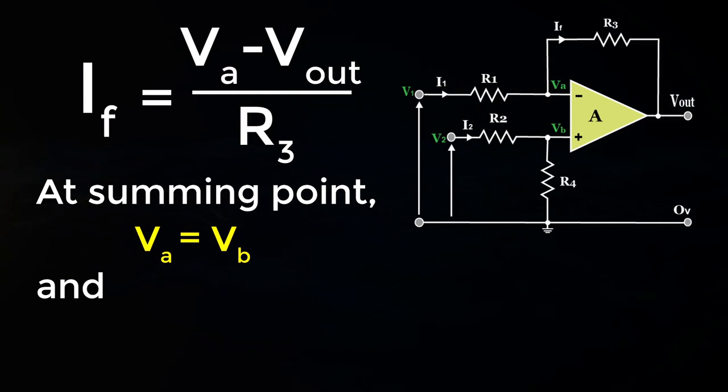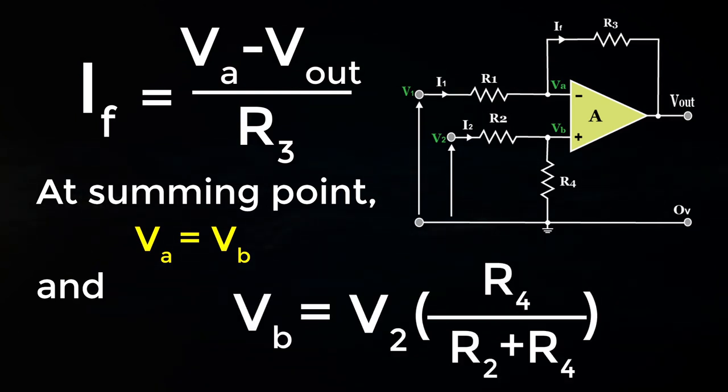At summing point, VA is equal to VB, and VB is equal to V2 into R4 by R2 plus R4.